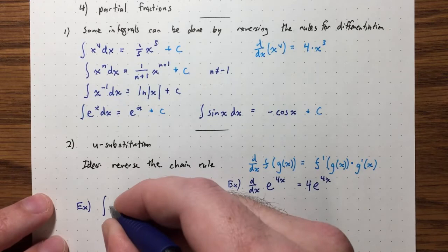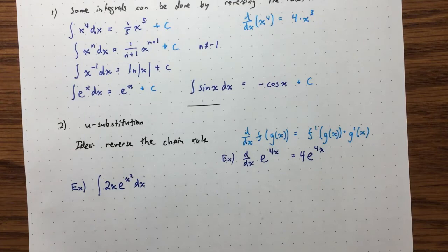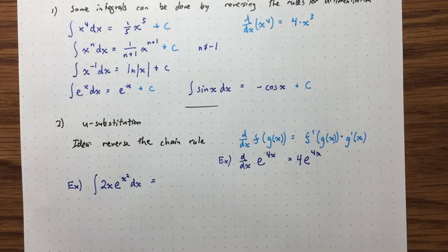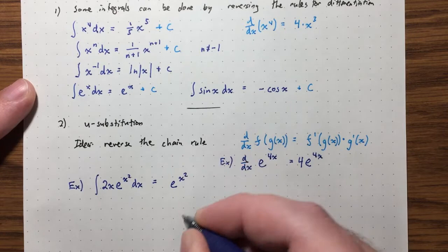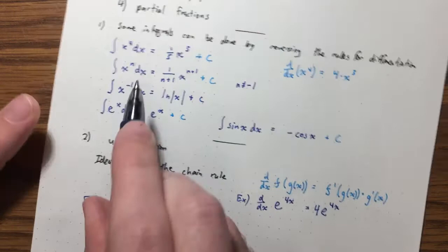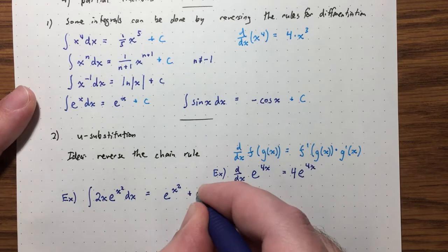Now let's reverse the chain rule. Let's do the integral of 2x times e to the power of x squared. You might see that 2x is the derivative of x squared. So if we understand how the chain rule works, we can immediately write down the answer: it's e to the x squared, because the derivative of e to the x squared gives e to the x squared times the derivative of the inner function x squared, which is 2x.